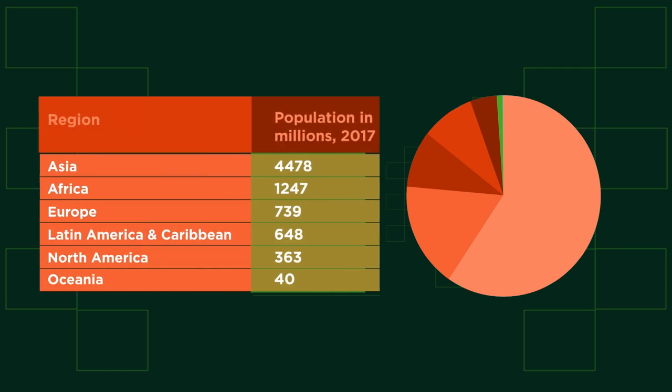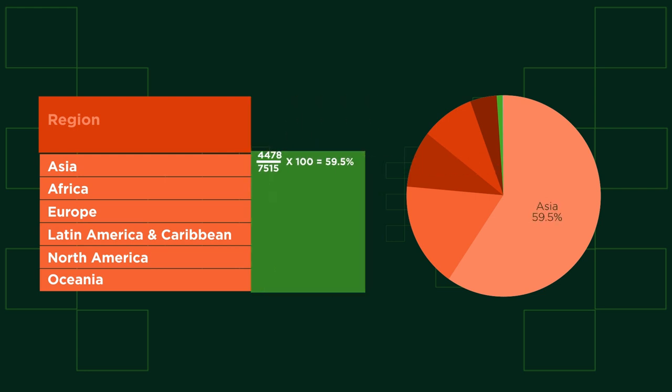Pie charts often also have the percentage written on them. What percent of the world population does each region contribute? We go back and turn the populations out of the total world population into a percentage. Nearly 60% of all people live in Asia. Can you work out what percentage of people live in each of the other regions? Pause the video, find the percentages, and click play when you're ready.